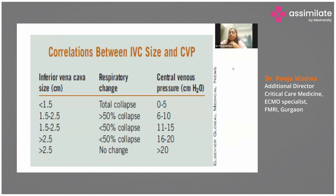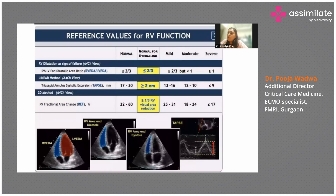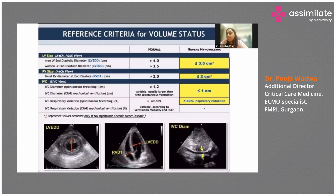These are the reference criteria for volume status. If your LV size is less than 3.5 centimeters, your patient is severely hypovolemic. RV size less than 2 centimeters and IVC size less than 1 centimeter — remember this as a crude method. If LV size is less than 3.5 cm, RV size is less than 2 cm, and IVC is less than 1 cm with more than 50 percent collapsibility, the patient requires fluids.